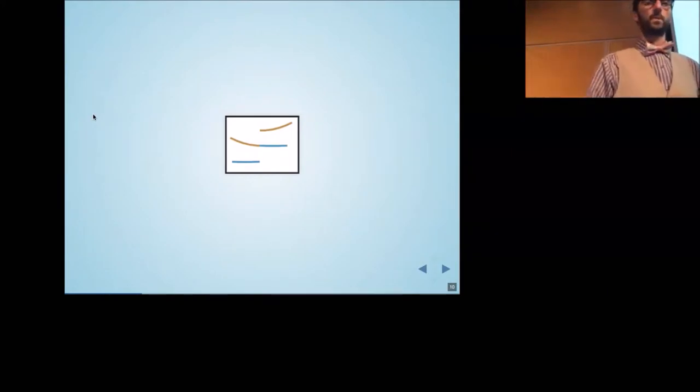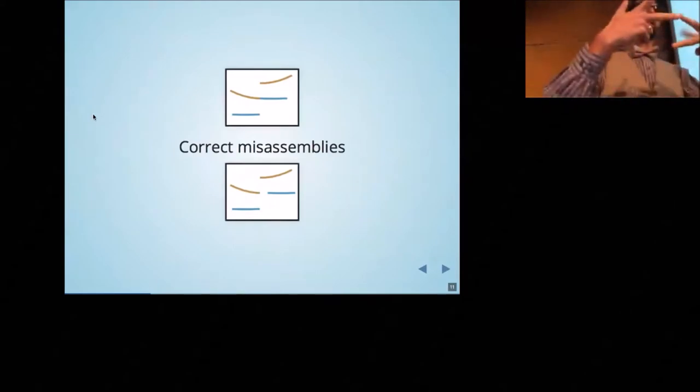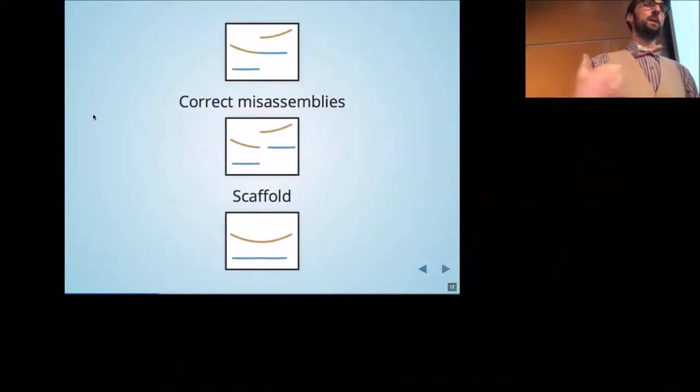No amount of scaffolding is going to fix this situation when you have that misassembly there between the yellow and the blue. First we have to correct that misassembly by breaking that yellow-blue chimeric contig into its two correct components. Once you've done that, now you can scaffold the assembly and finish it—put the yellow with the yellow and the blue with the blue. But as long as you have that misassembled contig in your assembly, you're never going to get to that point.